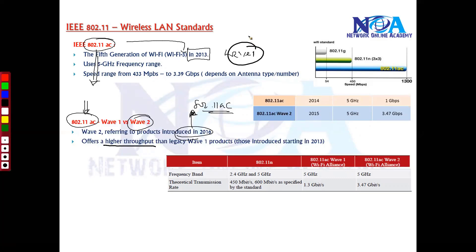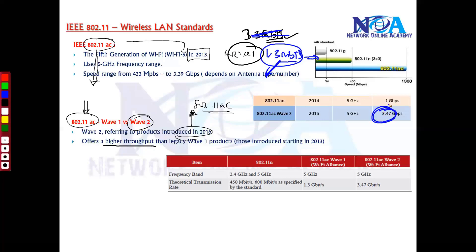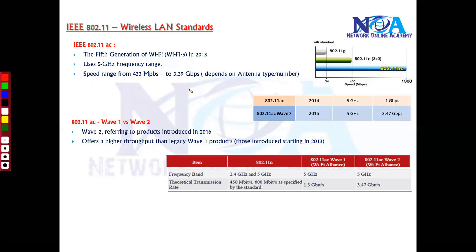The main difference with Wave 2 is that it offers better throughput compared to Wave 1. Wave 1 can reach a maximum of around 3.3 Gbps, but Wave 2 can offer more than that — normally starting at around 1.3 Gbps with a single antenna type and going up to 3.47 Gbps. Theoretically, Wave 2 offers almost double the throughput compared to Wave 1.